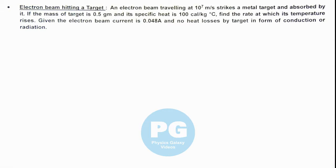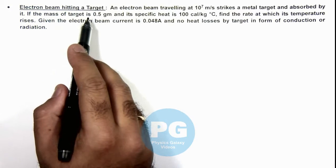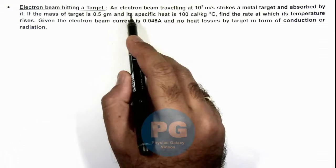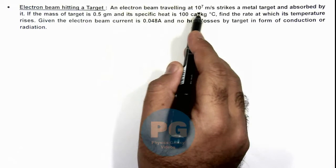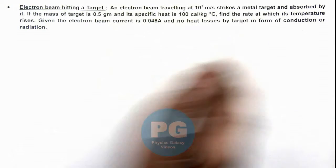In this illustration, we'll analyze an electron beam which is hitting a target. We are given that an electron beam traveling at 10^7 meters per second strikes a metal target and is absorbed by it.